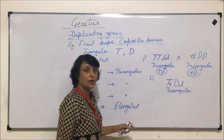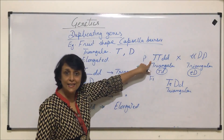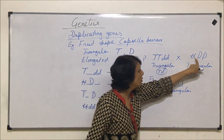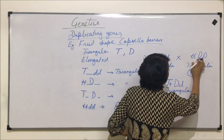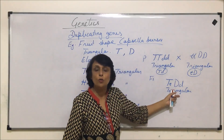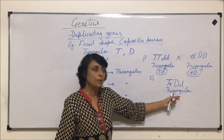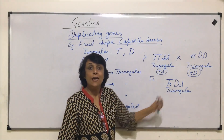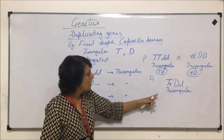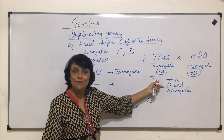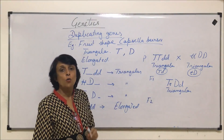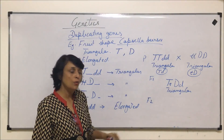We started with only T dominant giving the triangular phenotype, and only D dominant also giving the same triangular phenotype. Both together also give the same phenotype. To determine the F2 ratio, we need to self these F1 plants. On selfing, what ratio will we get?